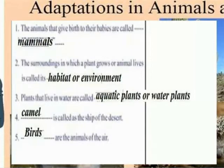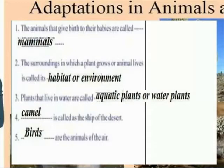Mammal. The surrounding in which a plant grows or animal life is carried out is called a habitat or environment. Plants that live in water are called aquatic plants. Camel is called the ship of the desert. Birds are the animals of the earth.